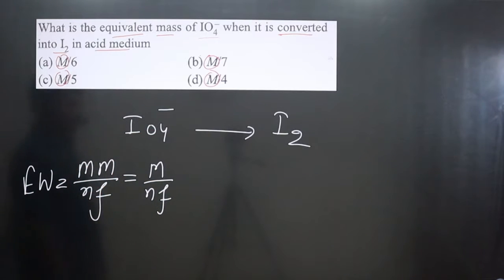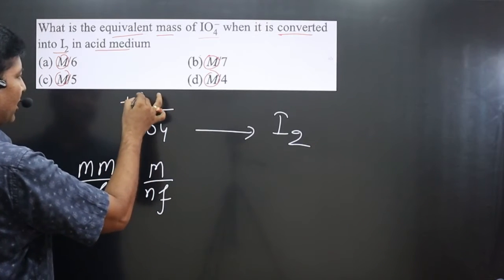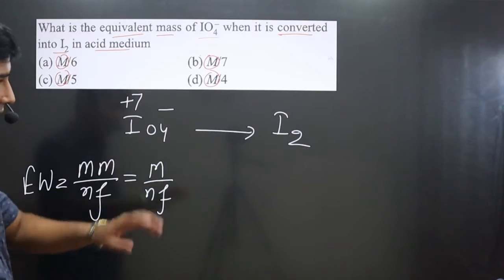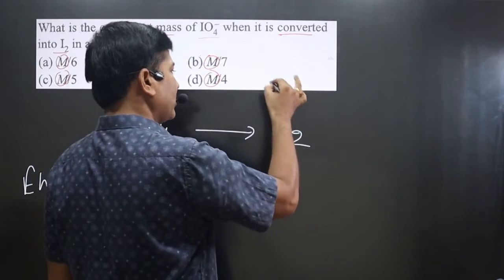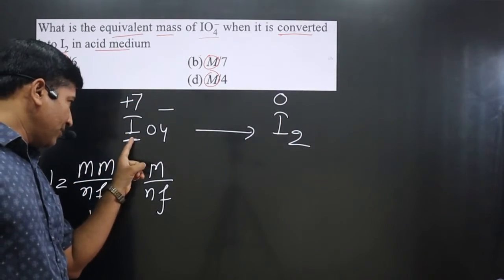equation. In IO₄⁻, iodine is present in +7 oxidation state. On the other side, I₂ is a neutral molecule with zero oxidation number. Keep in mind, we need to calculate the n-factor for a single iodine atom. One iodine is in +7